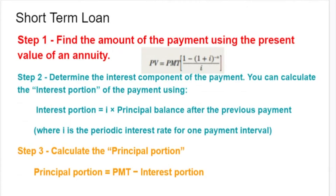So we need to be able to calculate them for each stage along the way. We need to be able to determine the interest. Interest on a loan is just the outstanding balance of the loan multiplied by the interest rate for that period — the periodic interest rate. It's the periodic interest rate times the principal balance. The principal repayment must then be the difference between what the payment is and the amount of interest. So if you're paying $300 a month and the interest is $100, the principal repayment must be $200.